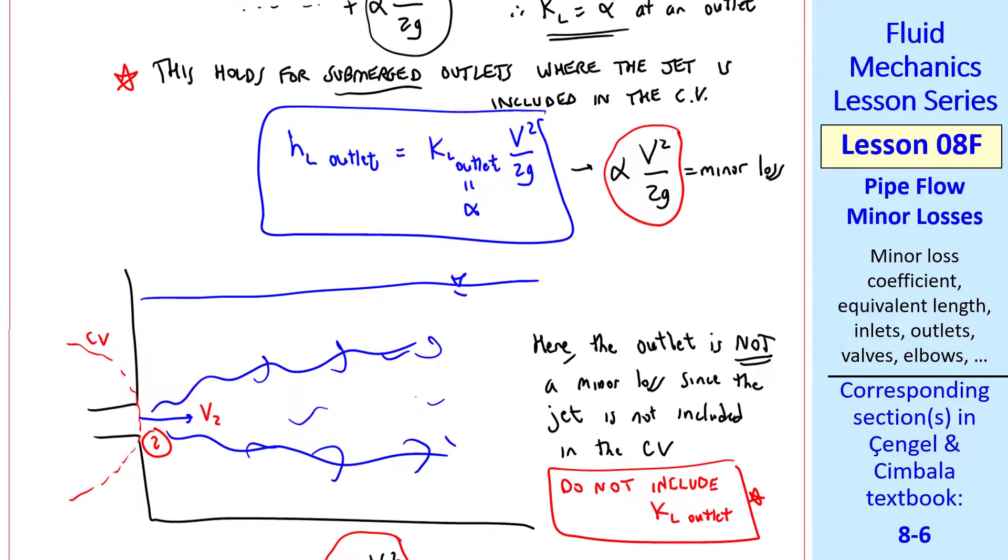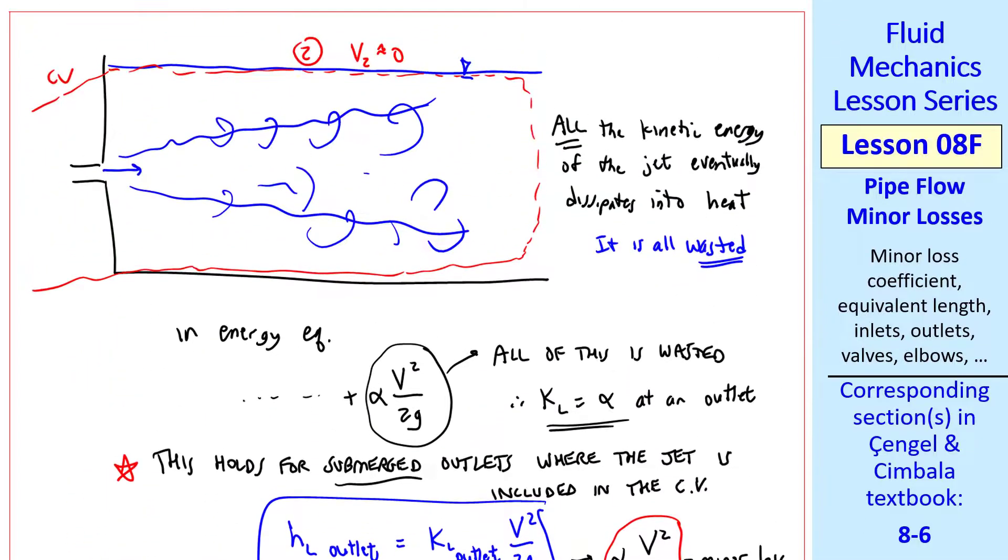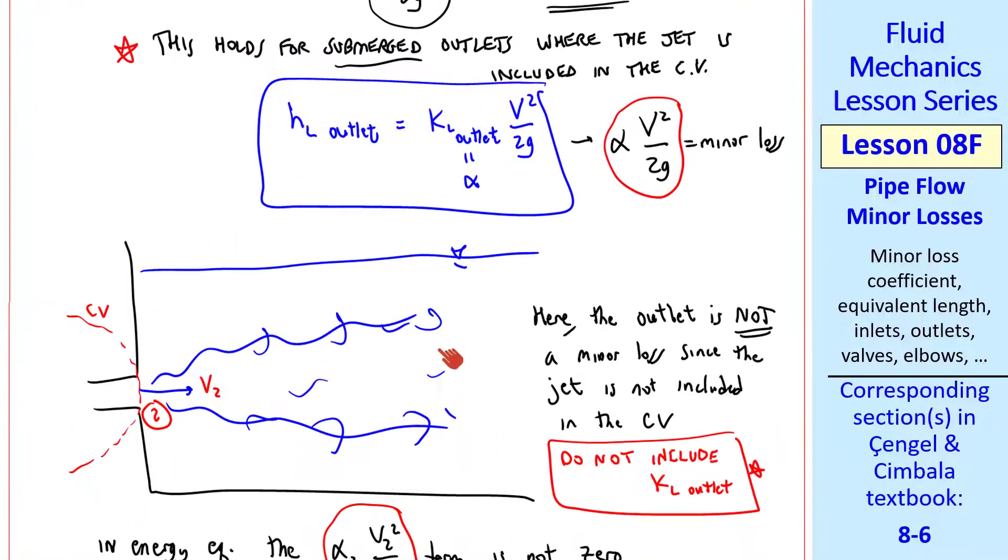The pressures also take care of themselves. Let me compare the two cases. Here P is atmospheric at this outlet, whereas if we use this control volume, P is atmospheric plus rho g times this height, and the pressure here is that hydrostatic pressure, but Z2 is that much lower.